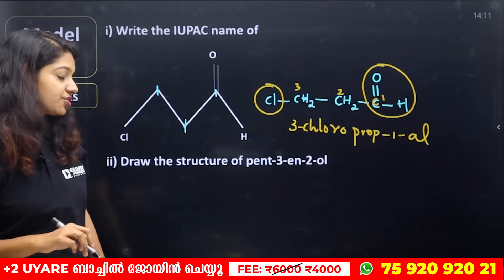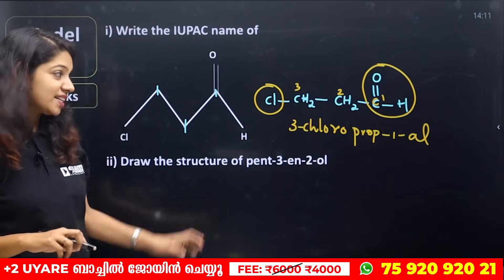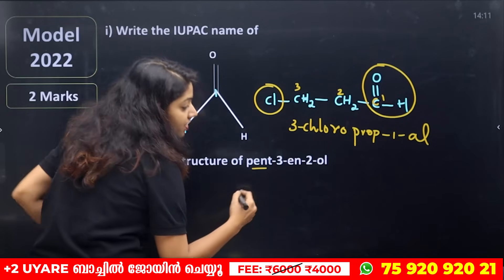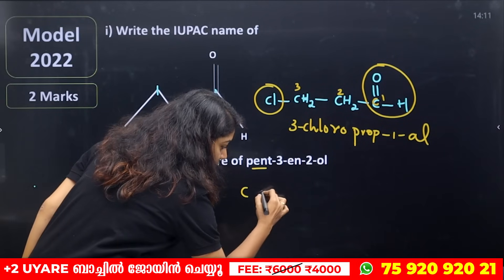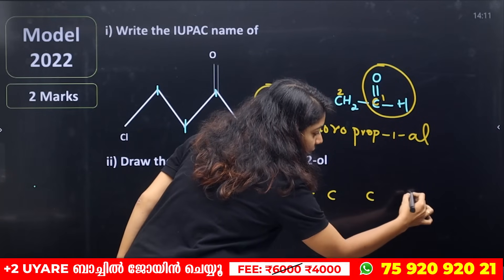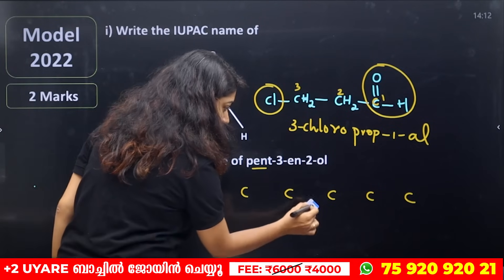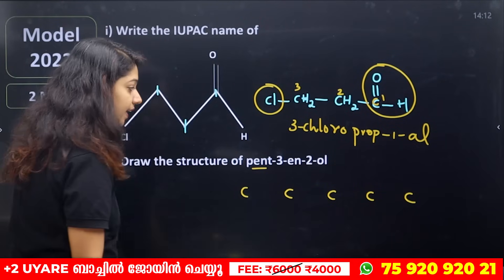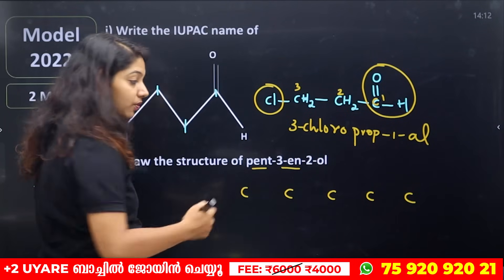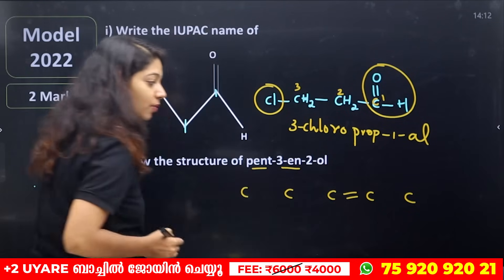Next, draw the structure of pent-3-en-2-ol. Pent-3-en-2-ol is the structure. If you want to make 5 carbons, that will be missing: 1, 2, 3, 4, 5. Bond is the last one. 5 will be marked. This is the third carbon atom. The third carbon atom has a double bond — 1, 2, 3. The third carbon atom is a double bond.